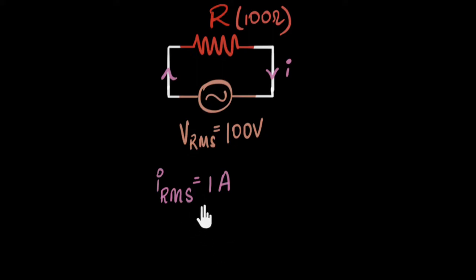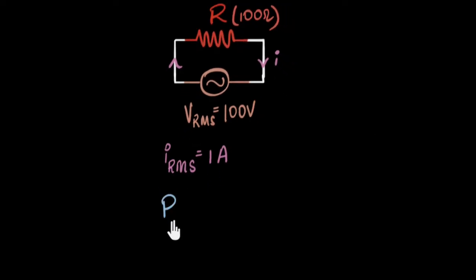Now, the beauty about RMS current is that it can help you calculate the average power very easily. The average power consumed by the resistor, or the power dissipated at the resistor, is IRMS squared times R. So in our example, the average power dissipated would be one squared times 100, that's 100 watts.